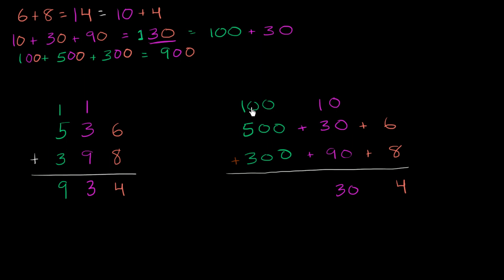Now we can add the hundreds. 100 plus 500 plus 300, we've already figured out, is 900. So we could write it as 900. And we're done.